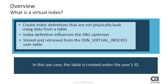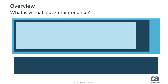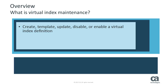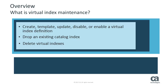In this use case, the table is created under the user's ID. Virtual Index Maintenance is the CA Plan Analyzer feature that lets you create, template, update, disable, or enable a Virtual Index definition. In addition, you can virtually drop an existing catalog index or delete the virtual indexes associated with the table.